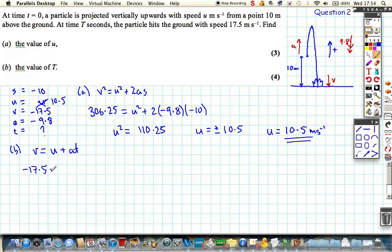So we're going to use V equals U plus AT. Minus 17.5 is equal to the initial, which we've just calculated, 10.5 upwards. Positive 10.5, remember. Plus minus 9.8 T. So if we sort all this out, minus 28 is equal to minus 9.8 T. That's going to leave us with a positive T when we do the division.